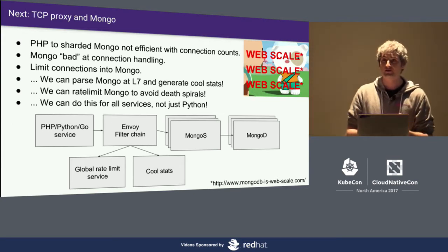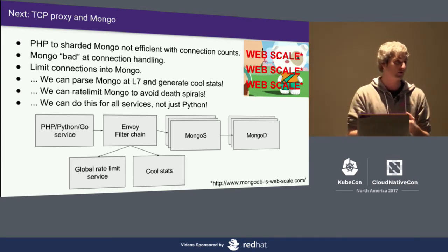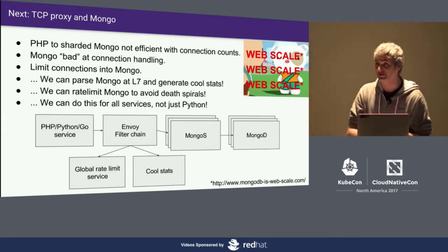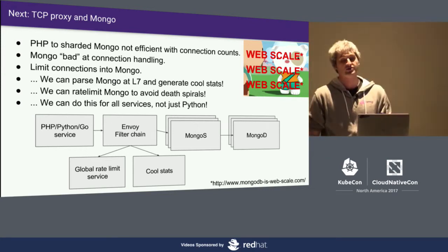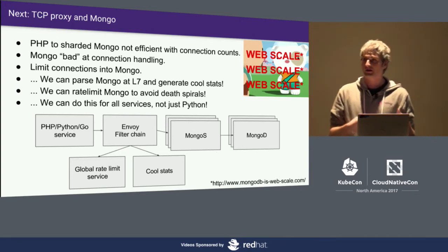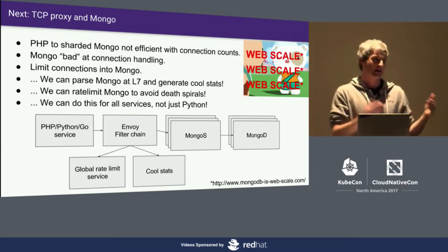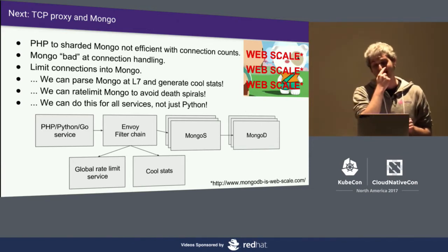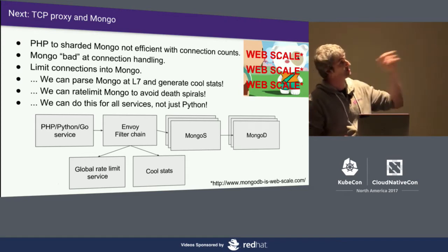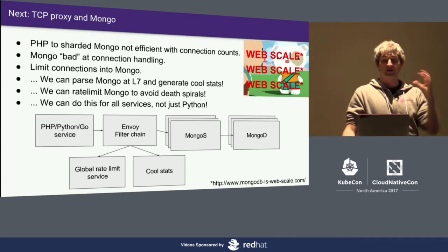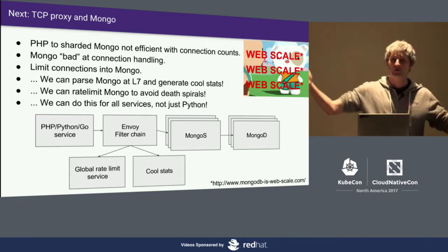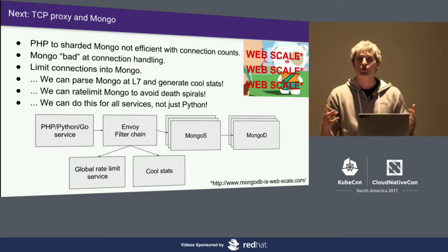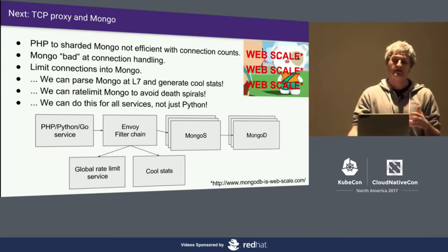We realized we could use Envoy on the PHP monolith to collapse connections from PHP to MongoDB — monitoring and rate-limiting all connections coming into MongoDB from the client side. And while we're at it, we can actually parse the BSON and pull out amazing stats about latency, tables, query patterns, multi-gets, and scatter-gets. We can do this for all services — Python, Go. Instead of rewriting all this rate-limiting functionality in every Mongo driver, we write it once in Envoy, point all applications at Envoy, and lo and behold — no more Mongo outages due to death spirals. The applications don't have to do anything; we just roll it out and it works.